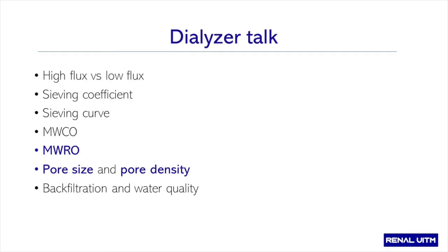The key point is that the dialyzer membrane is not just a flat piece of surface with holes. It is made up of layers of complex and unbelievable technology. The aim of a dialyzer is to remove middle molecules whilst retaining albumin, and this is achieved by convection. To understand HDX, it's important to understand definitions: high flux versus low flux, sieving coefficient, sieving curve, molecular weight cutoff, molecular weight retention onset, pore size and pore density, as well as back filtration and water quality.